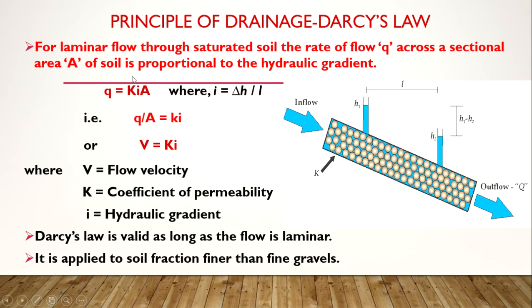We can also write it as Q = kiA, where Q is the discharge, k is the hydraulic conductivity, i is the hydraulic gradient, and A is the area.